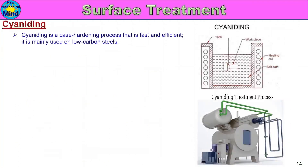Cyaniding is a case hardening process that is fast and efficient. It is mainly used on low carbon steels for case hardening.